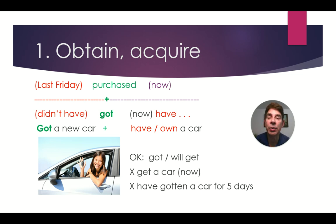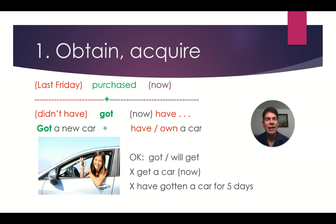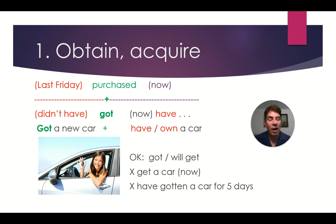It's okay to use the past tense with GET, or the future tense. Next week, I will get a new car. We seldom use GET in the present tense. We don't say 'I get a new car now.' Also, we do not use it to express situations over a long period of time. We do not say 'I have gotten a car for five days.' No — you only got the car on one day. You have owned the car, or you've had the car for five days.